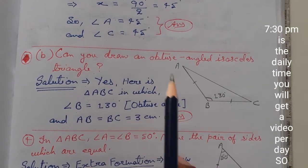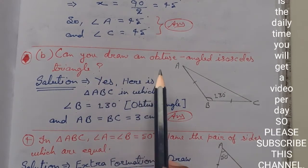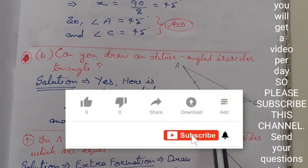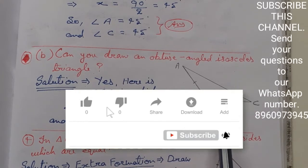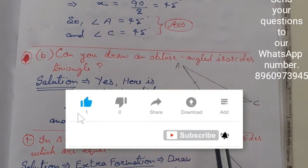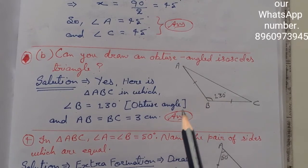So in this way, if you want to draw a triangle like this, you can draw an obtuse angled triangle which is isosceles, which means two sides are equal and it is obtuse angled. So you can see that this figure has been drawn.